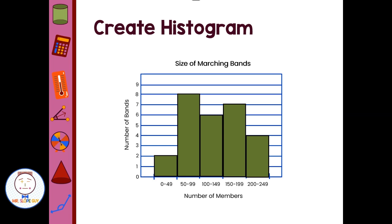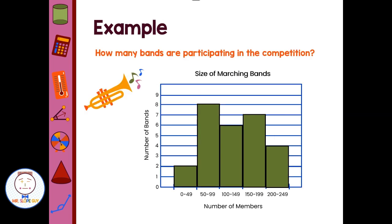Then we can take our graph, our histogram, and we can answer some questions about it. We might get questions like, how many bands are participating in the competition? All right, well, we can add those up. We could go back to our list and count, but we already have this nice summary. We can do two plus eight plus six plus seven plus four and get that we have 27 bands in our competition.